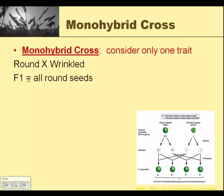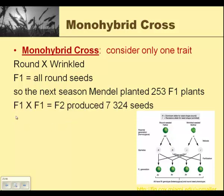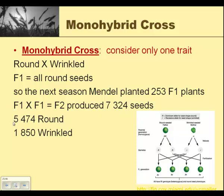What Mendel found in his first generation, the F1 generation, was that it had all round seeds. So the next season, Mendel planted 253 F1 plants. When he crossed the F1 plants by the F1 plants to produce the F2 generation, he produced 7,324 seeds. Of those, he found 5,474 were round and 1,850 were wrinkled.